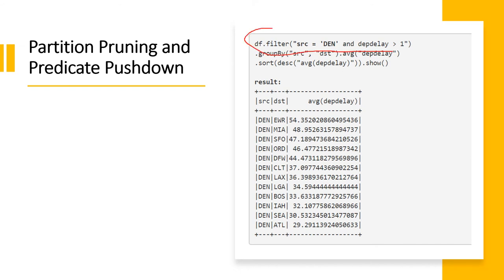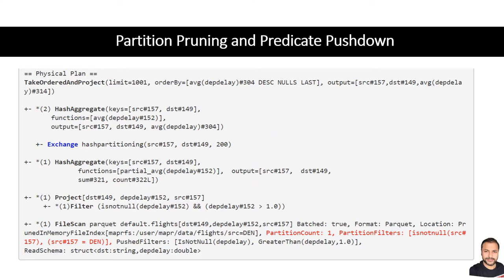Now when we try to read this data and apply filtering on the same partition key — source — and look at the physical plan, we see that only one partition is read. There is a separate directory for 'source=DEN' (Denver), and Spark is smart enough to go directly to that directory and read all the data under it, without touching other directories. In the physical plan, the partitions read is only one, corresponding to source=DEN. This is where predicate pushdown comes in — the filter has been pushed down below the scan, so we first filter based on the partition key and then do the scan.